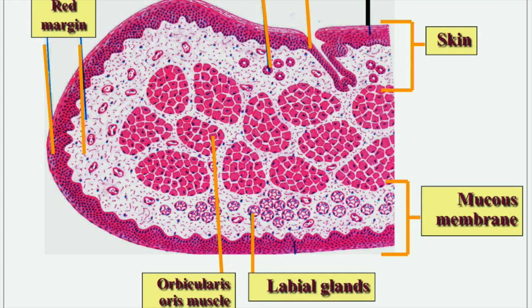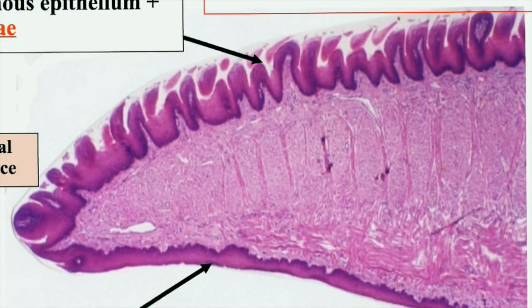The vermilion or red margin is formed of thin skin but has no sweat glands, no sebaceous glands, and no hair follicles. Its histological characters include very deep dermal papillae and a lamina propria very rich in blood vessels. The summary of vermilion features: thin skin, deep papillae, rich blood vessels, and absence of sebaceous glands, sweat glands, and hair follicles.